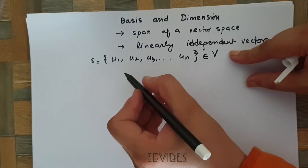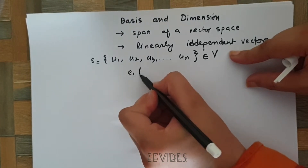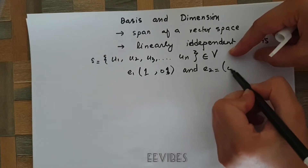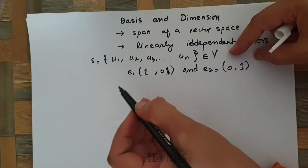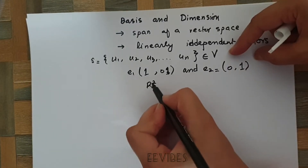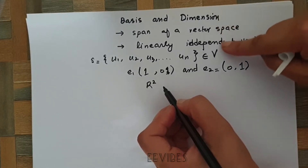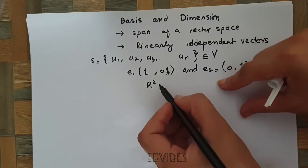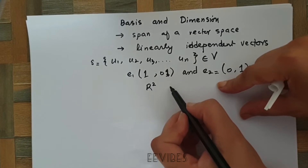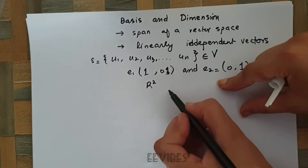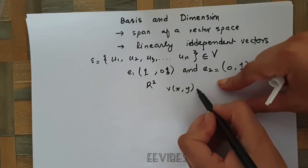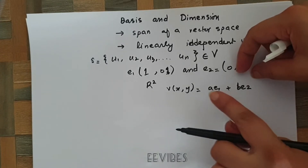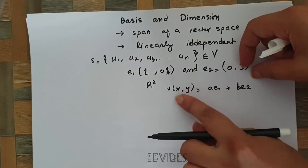For better understanding, let's say the vector e1 = (1, 0) and e2 = (0, 1). We will see that they form the basis in R². We can check these two properties: since we can generate any vector having two components using these two vectors, we can generate any vector with components (x, y) as a linear combination a·e1 + b·e2.